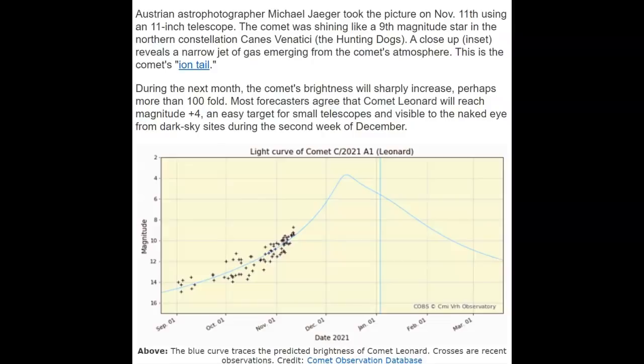Michael Jaeger took this last night using an 11-inch telescope. The comet was shining like a ninth magnitude star in the northern constellation of Canes Venatici, which means the hunting dogs. A close-up insert reveals a narrow jet of gas emerging from the comet's atmosphere. You could see that in the pictures—it's called an ion tail.